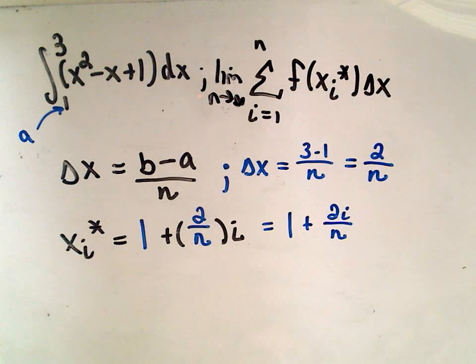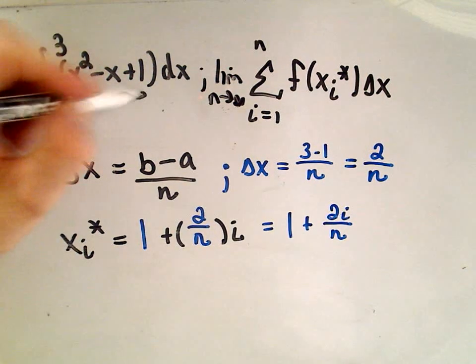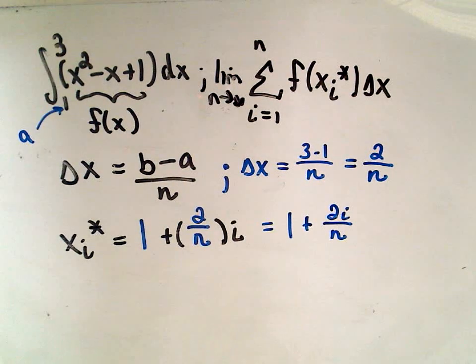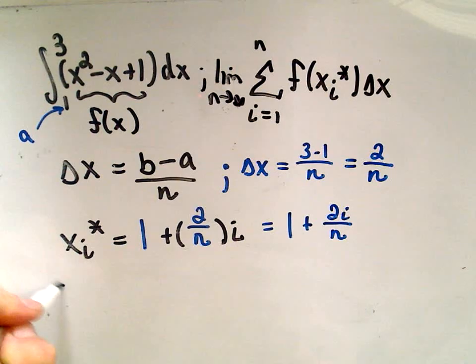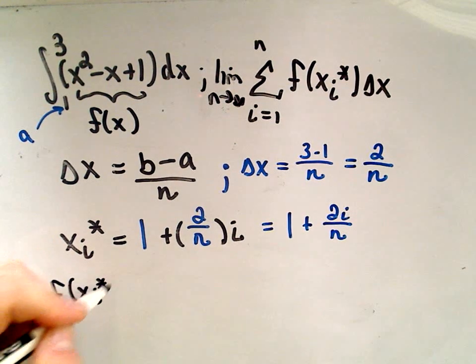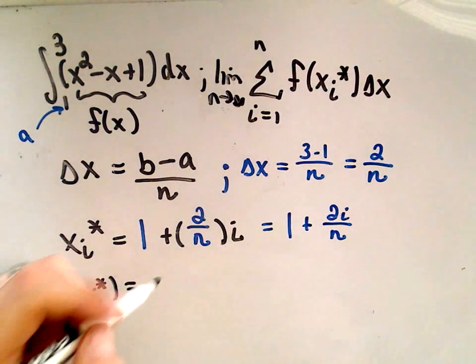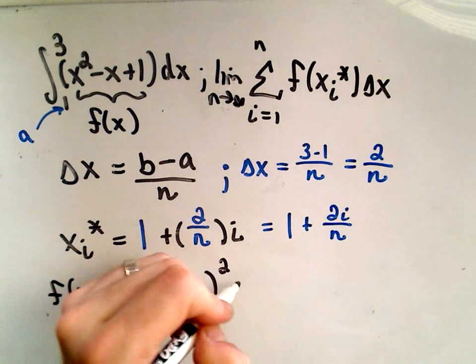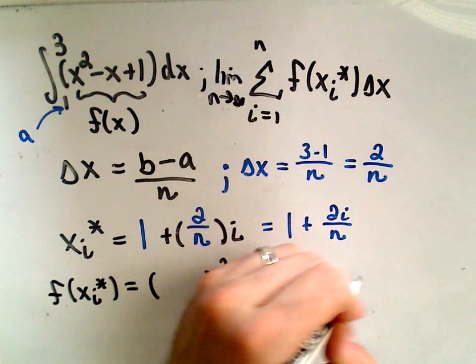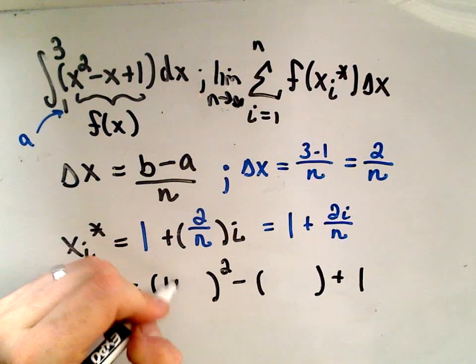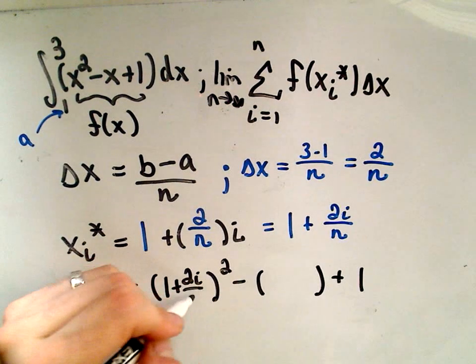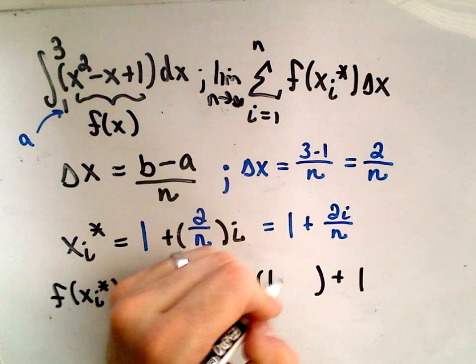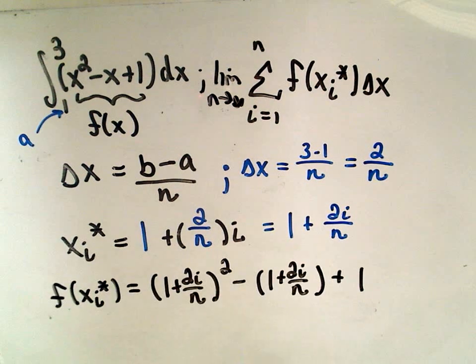The function that we're integrating in this case, this is our f of x. We're trying to integrate x squared minus x plus 1. So that means our value f of x sub i star, that's going to equal, originally it was x squared minus x plus 1. So if we plug that in, we'll get 1 plus 2i over n quantity squared minus 1 plus 2i over n. I think probably it's a good idea at this point to simplify this out. These are pretty long and tedious problems as you're about to witness, unfortunately.